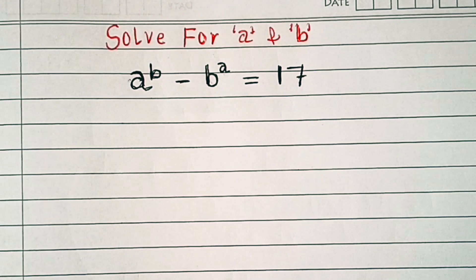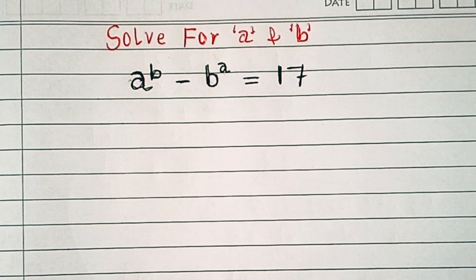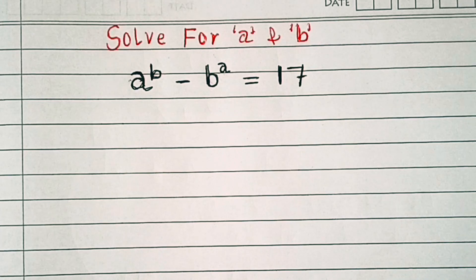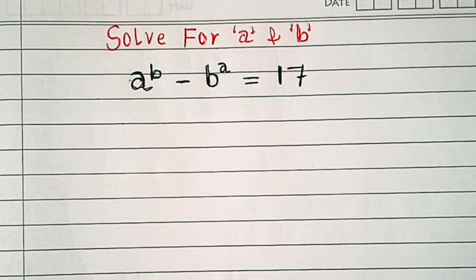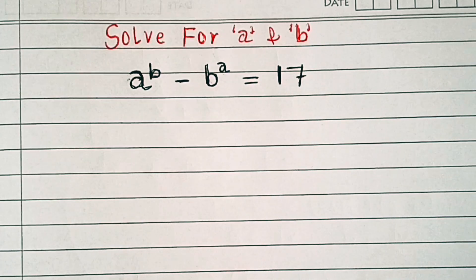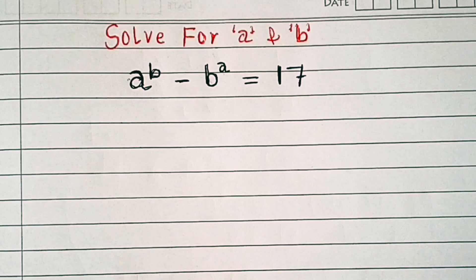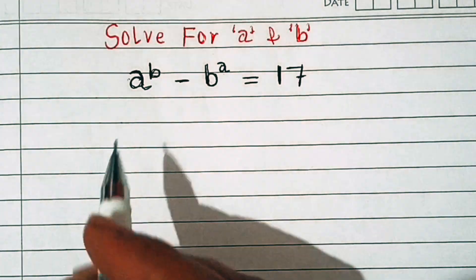Hello, we have a^b minus b^a equal to 17. We will solve this for a and b. So what is the best way to solve such problems? Let's see.